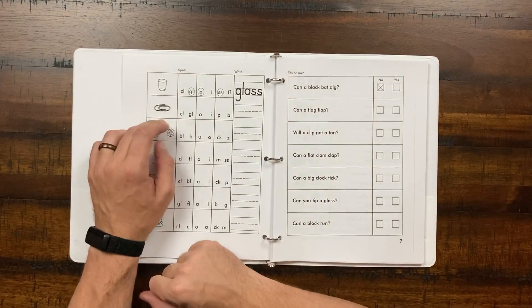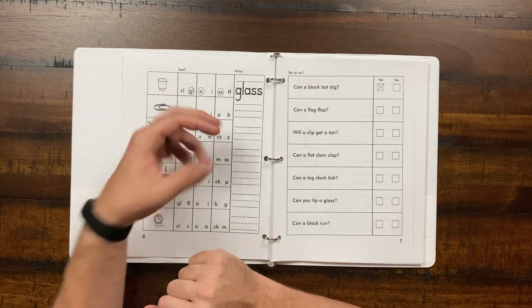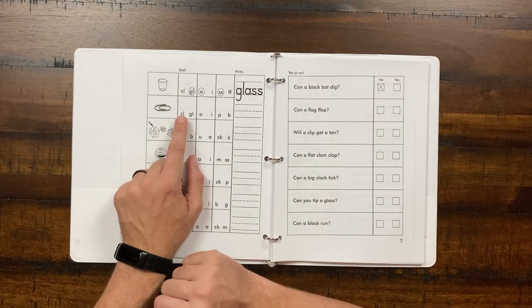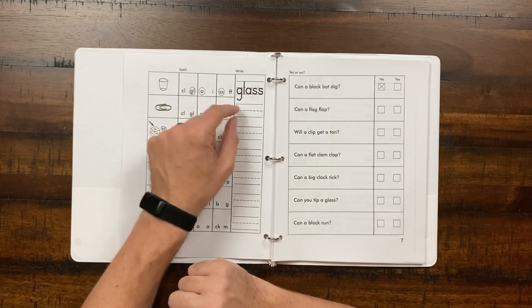Next here, they'll be looking at the image, and then they have to go ahead and circle the phonetic pieces of this. So this is a clip, so they'll circle CL, I, P, and they'll circle each piece, and then they'll go ahead and spell that.